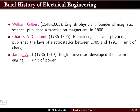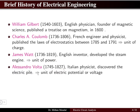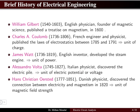James Watt, inventor of the steam engine, is honored by the unit of power — the Watt. Alexander Volta, an Italian physicist, discovered the electric pile, and the unit of electric potential — voltage — is named after him. Christian Ørsted, a Danish physicist, discovered the connection between electricity and magnetism in 1820, and his name was given to the unit of magnetic field strength.